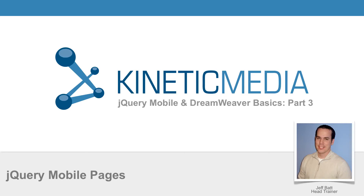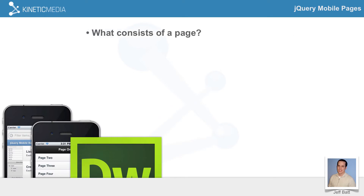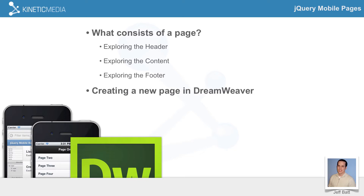Hello and welcome to part 3 of Kinetic Media's jQuery Mobile and Dreamweaver Basics. In this training we're going to talk about jQuery Mobile pages and actually working with pages inside of jQuery Mobile. We'll talk about what consists of a page — exploring the header, the content, and also the footer. When you're talking about a page, those are the three things that consist of it. We'll also talk about creating a new page inside of Dreamweaver and doing that manually in the code.